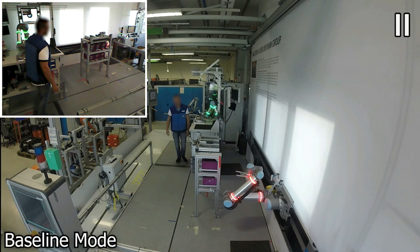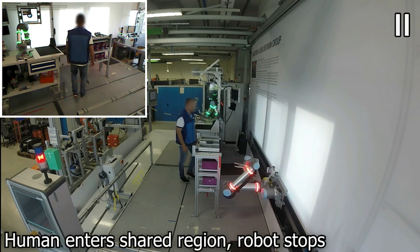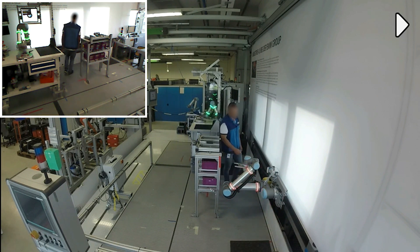First, we examine this scenario when using the baseline method, which emulates the behavior of standard safety systems in factories today. As the human enters the shared region, the robot is stopped.